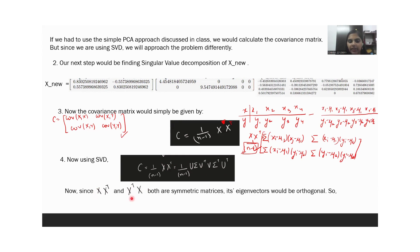X times X transpose and X transpose X are both symmetric matrices and eigenvectors are orthogonal. So V transpose V would be I and U U transpose would also be I.